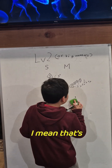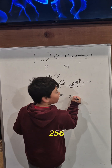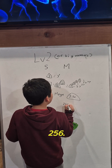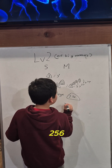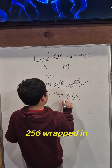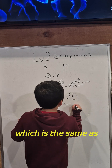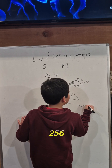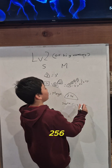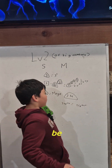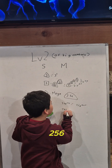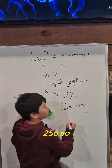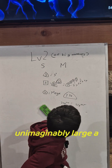So that's 256 wrapped in 256 triangles. That's 256 to the power of 256, to the power of 256 wrapped in 255 triangles. Which is the same as 256 to the power of 256, to the power of 256 wrapped in 254 triangles — and so on. So unimaginably large.